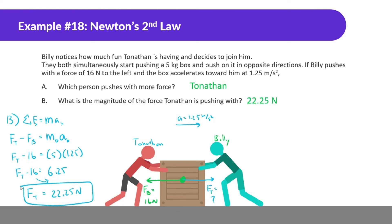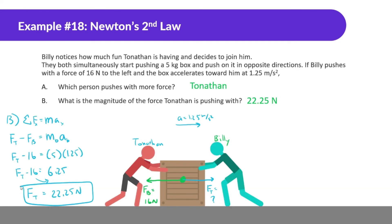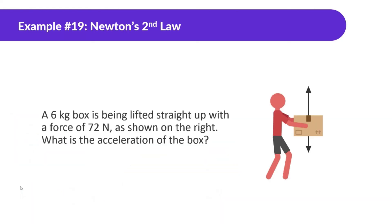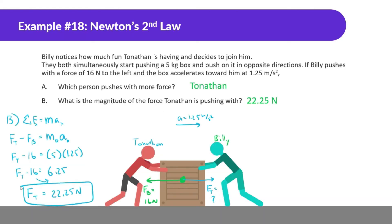We confirmed that Tonathan is pushing with more force — 22.25 newtons versus Billy's 16 newtons. That's pretty much it. I hope that was helpful. Next time we start talking about vertical motion — we've been doing everything in the x direction, but not in the y direction. Pretty similar, but a little different. Thanks for watching everyone, bye.